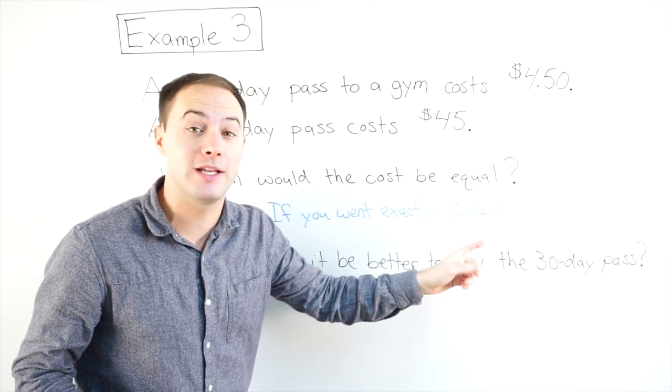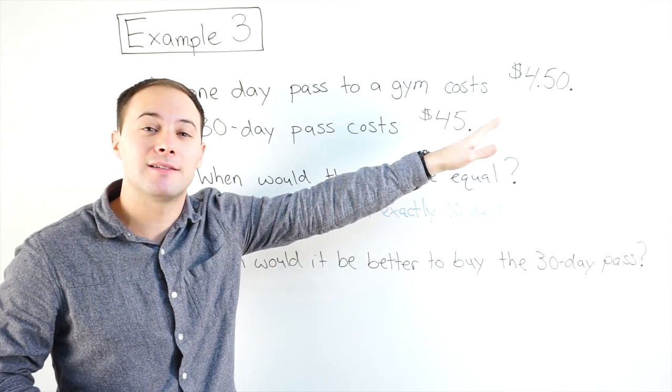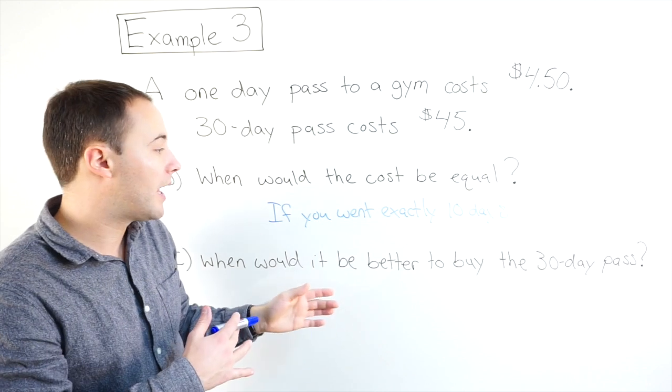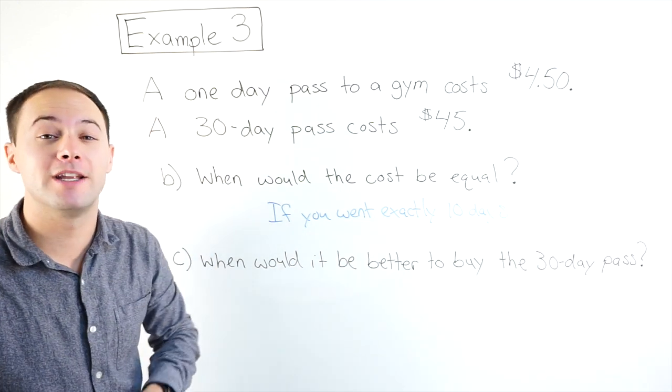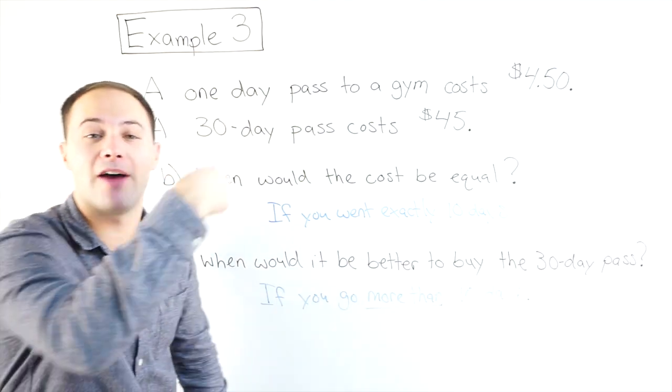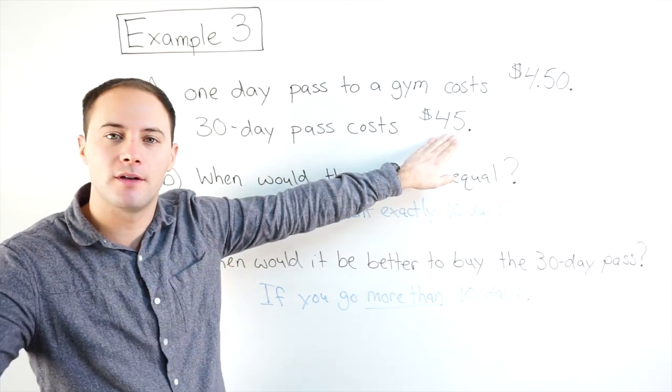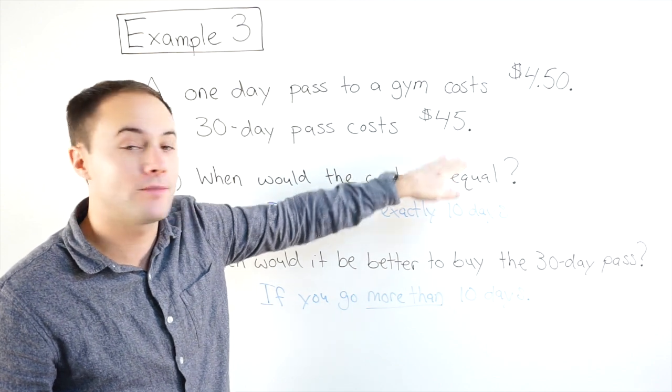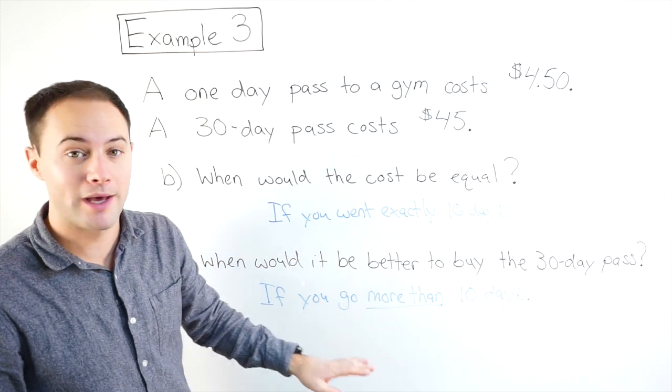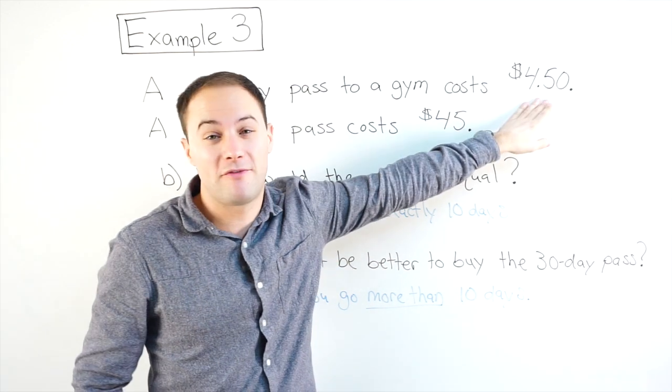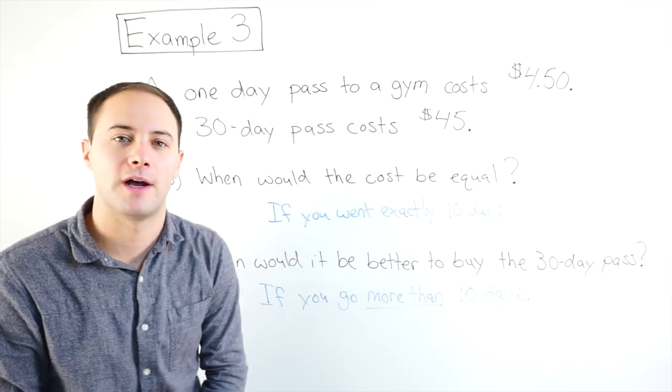Well, if it was cheaper to buy the day pass if you went less than 10 days, and if you do exactly 10 days it doesn't matter, well then, if you go more than 10 days, the 30 day pass would be the better deal. Because after every day above 10, it doesn't matter. You don't get charged anymore because it's just a $45 straight fee. No matter if you go 11, 12, 13, if you go 25 days or if you go all 30, that would be the better deal. Because if we did 30 days and paid $4.50 each day, well, 30 times 4.5 is going to be much greater than 45.